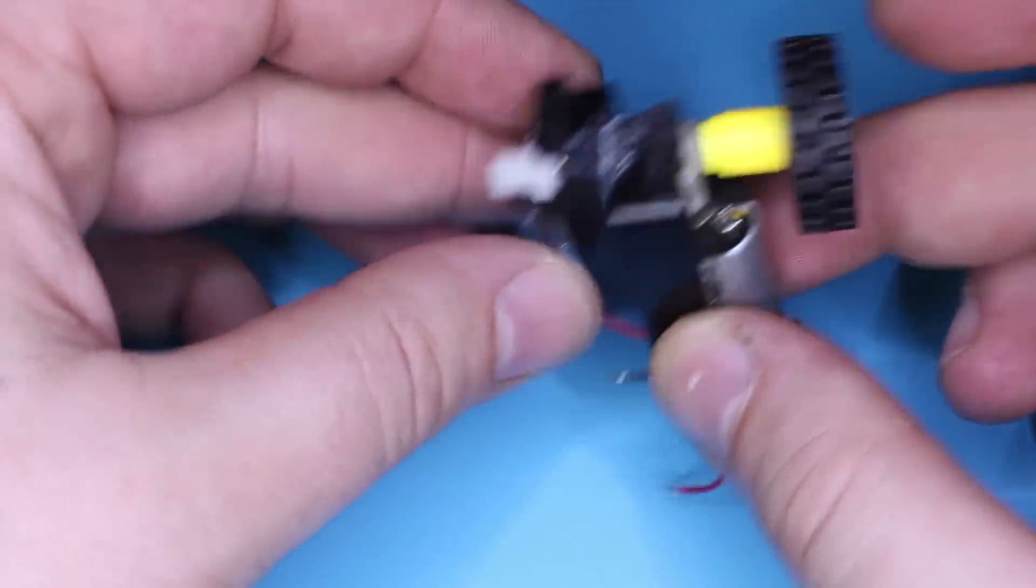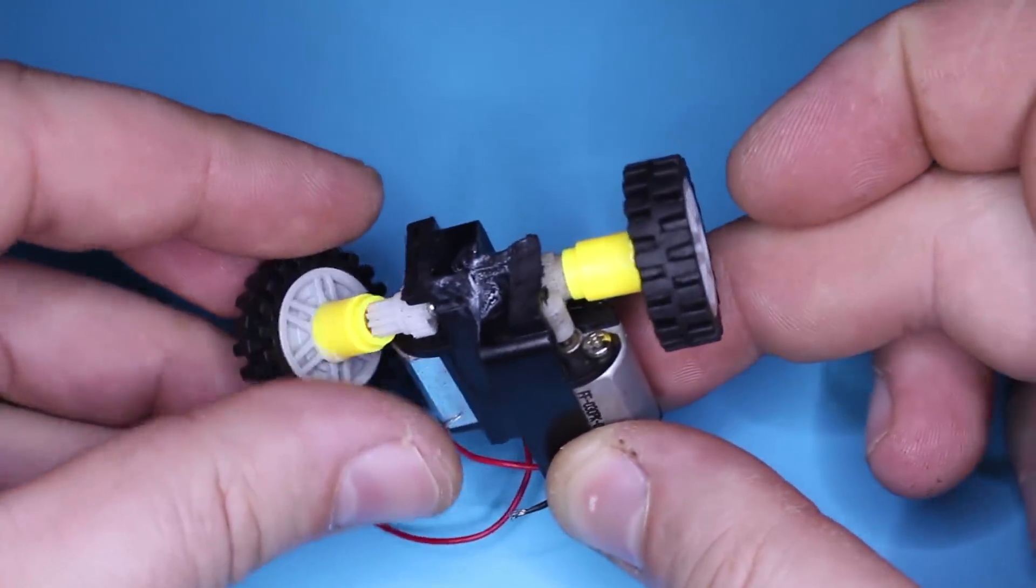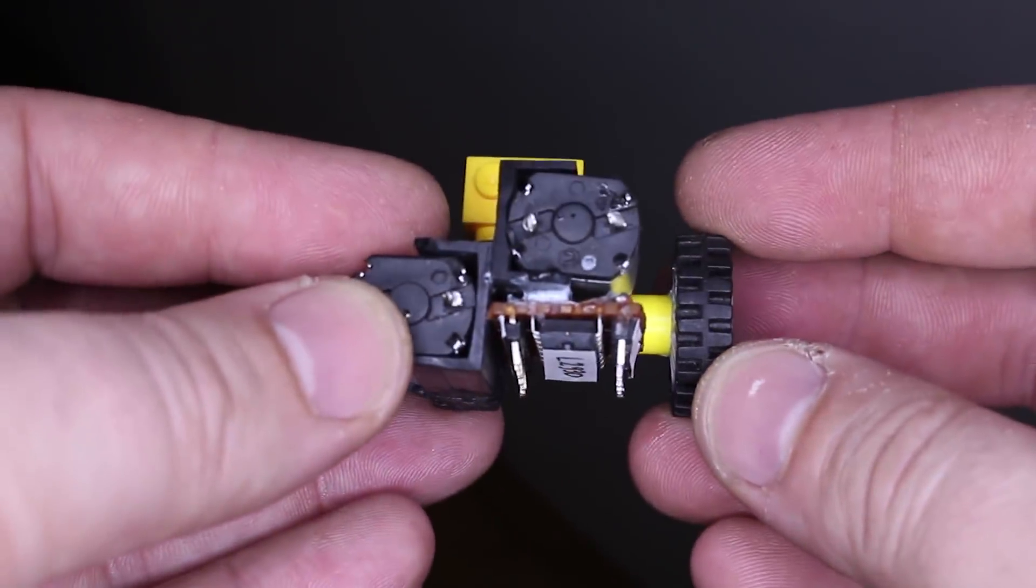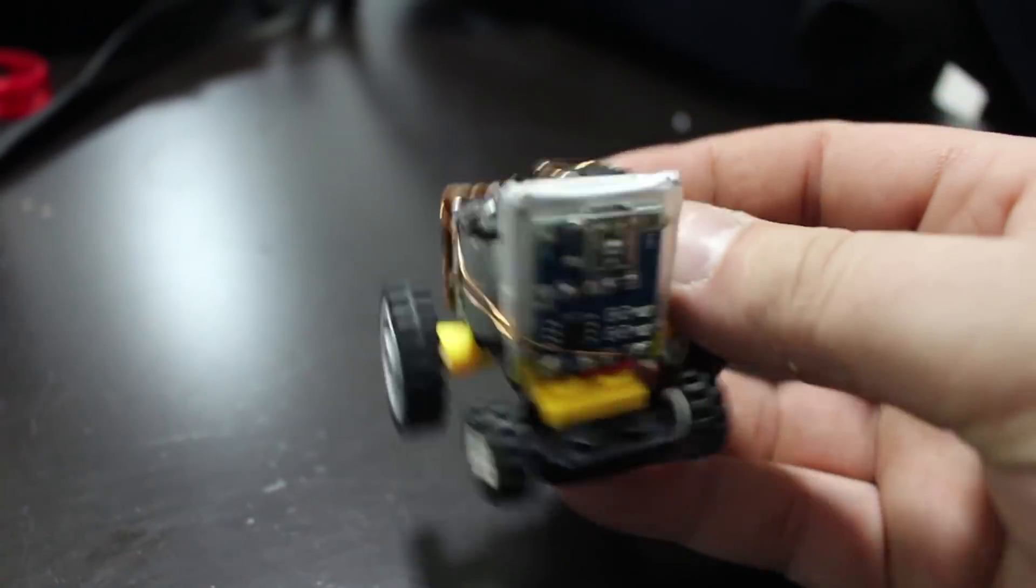On those small DC motors I added Lego wheels. Both DC motors are glued together. Also, I glued the L293 motor driver, LiPo battery with charger module, and main board on top.